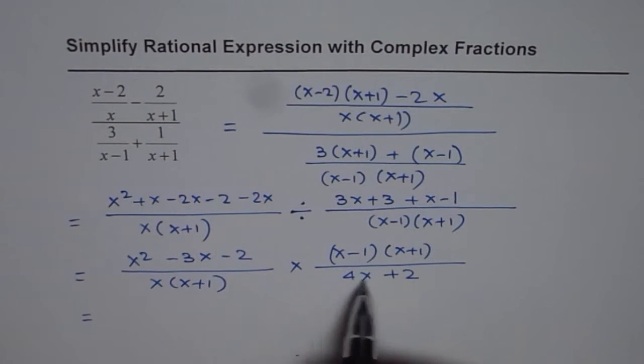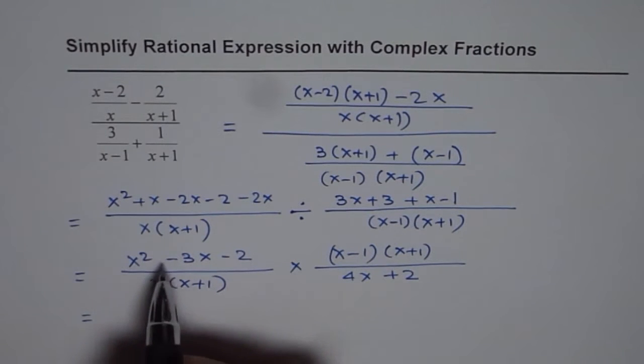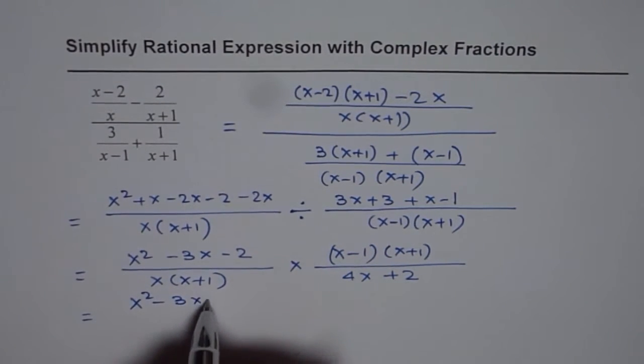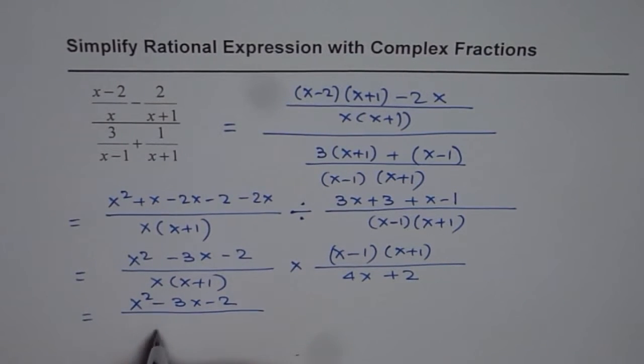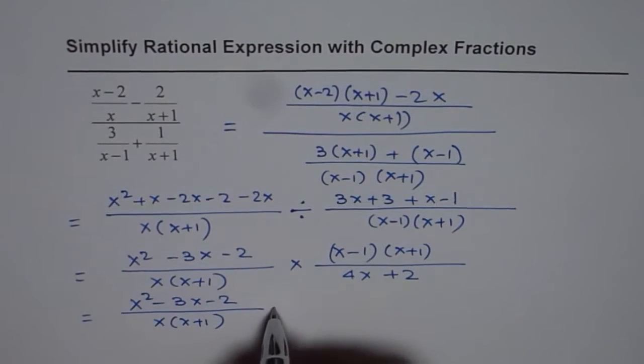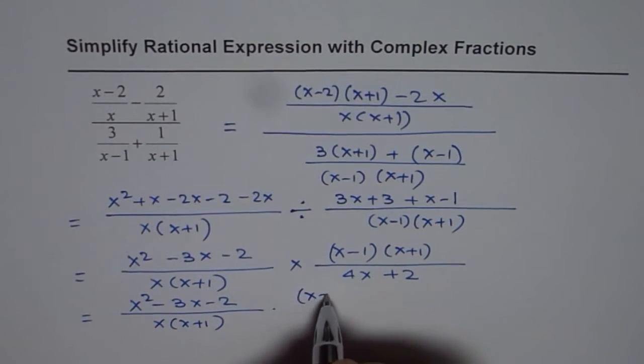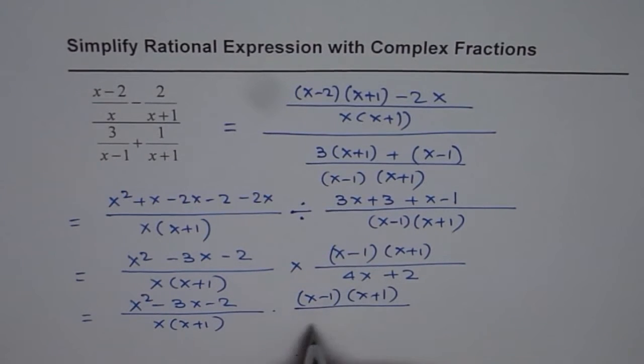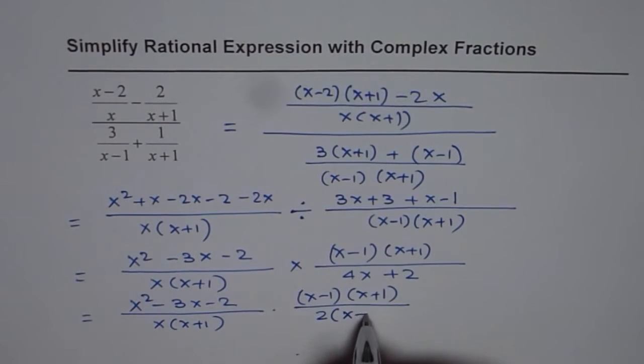Here, we can factor this one. We cannot factor this, let us keep it as such. So we can factor 2x plus 1, and this is multiplied by x minus 1 times x plus 1, and here we can factor to get 2x plus 1.